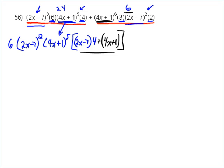So I should simplify what's inside here. So 6 times 2x minus 7 squared, 4x plus 1 to the fifth. So this is going to give me 8x plus 4x, which will give me 12x. And then negative 28 and 1, which will give me negative 27.